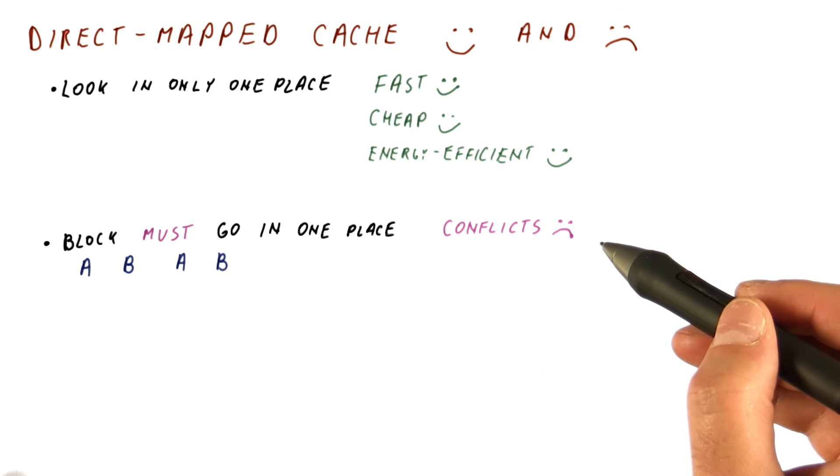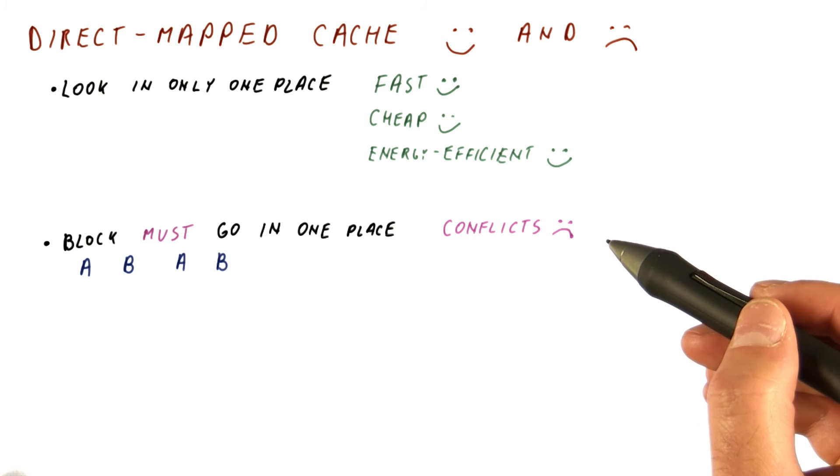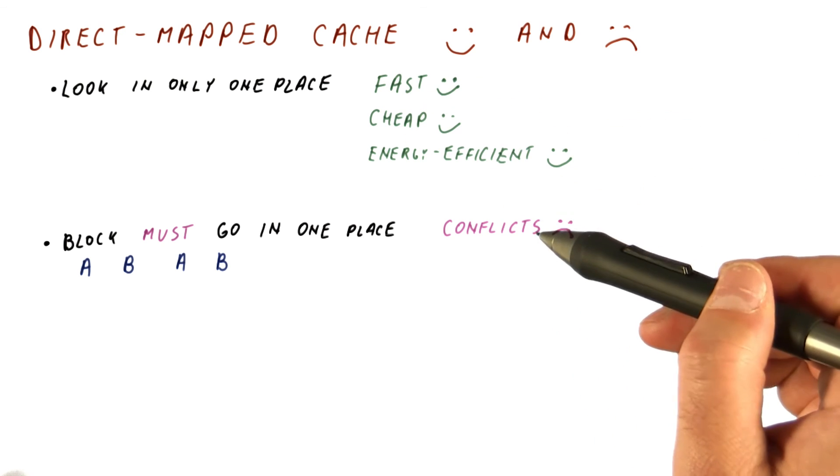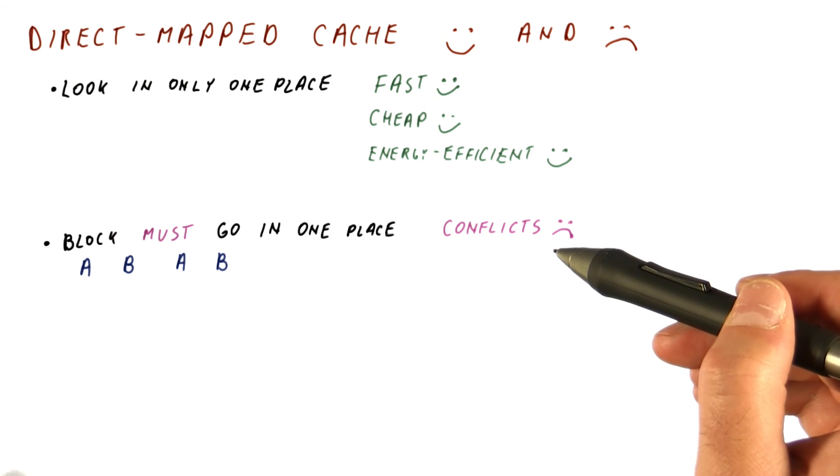What conflicts do is they increase the miss rate. So we can have a cache that has a fast hit time but suffers in the miss rate in return.